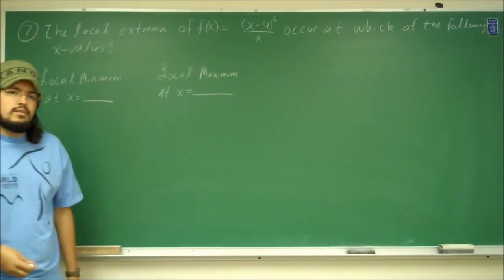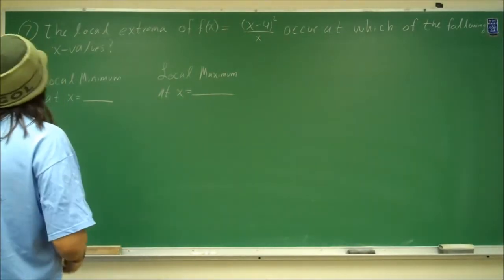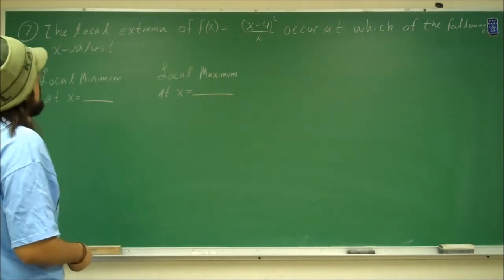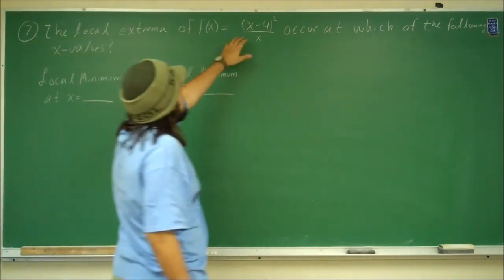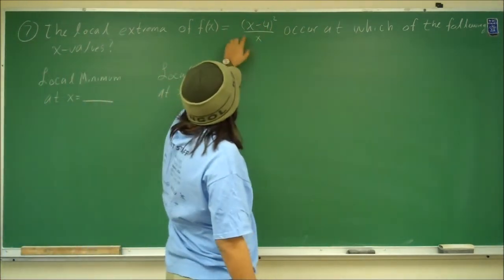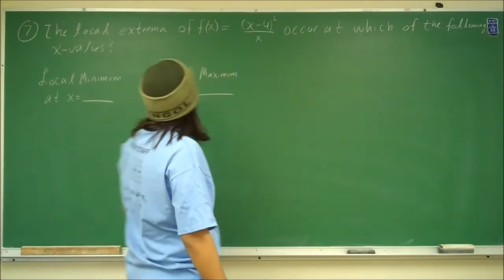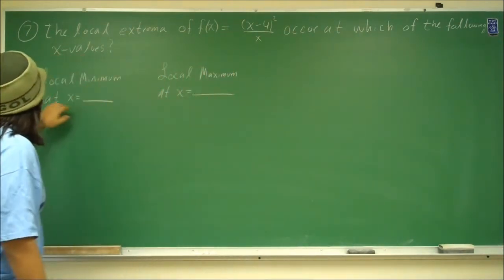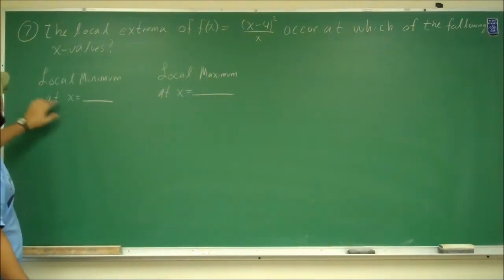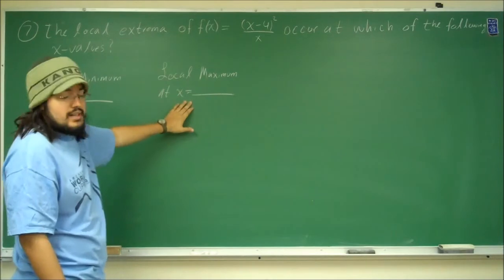Alright, so there's problem 7. Problem 7 reads: the local extrema of f(x) = (x - 4)² divided by x occur at which of the following x values. So we have a local min at what x value and a local max at what x value.